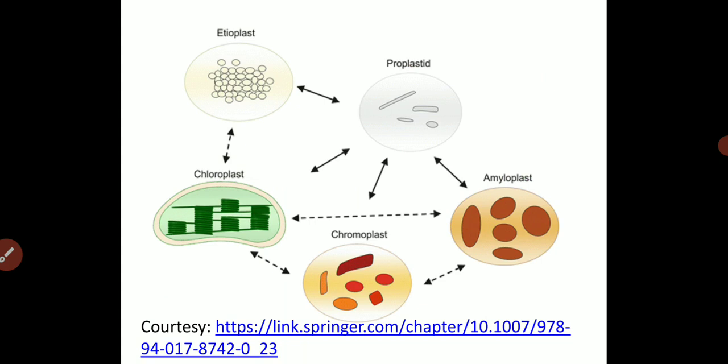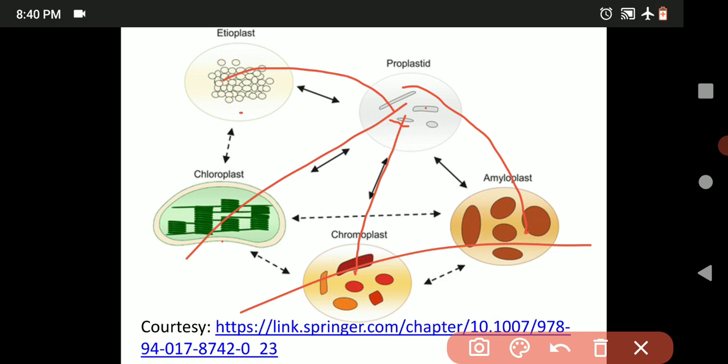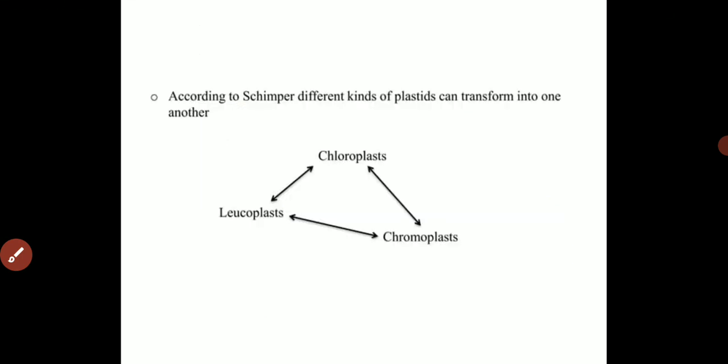This slide talks about the conversion of plastid types from the protoplastid. The protoplastid can be converted into etioplast, chromoplast, chloroplast, or amyloplast. The protoplastid has the capacity to convert itself into any kind of plastid. This cycle of chloroplast, chromoplast, and leucoplast conversion — as discovered by Schimper — takes place inside the photosynthetic organism according to the cell's requirements.